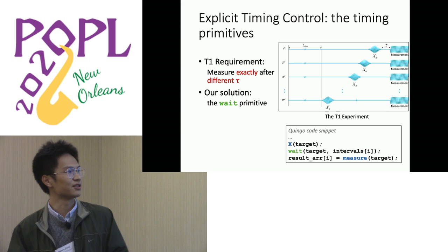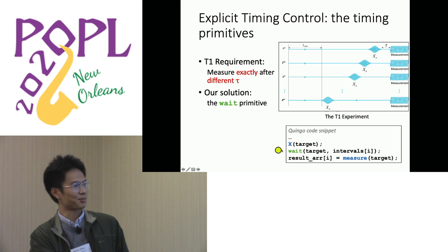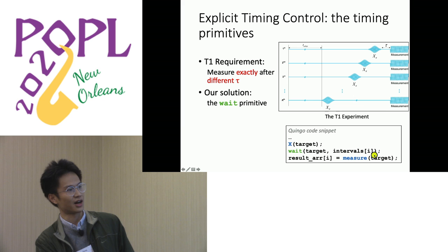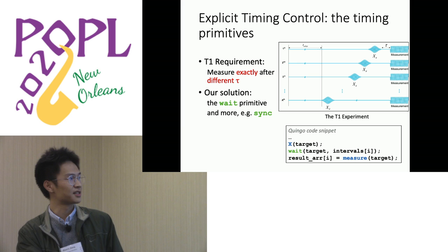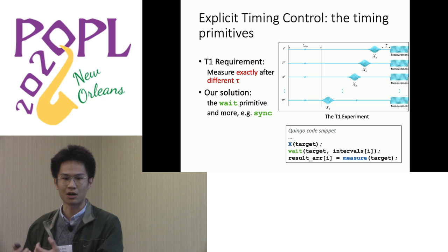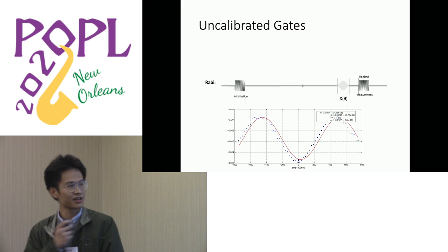Our solution is to provide a 'wait' primitive. Here is a Quingo code snippet: it first applies an X gate to the target qubit, waits for a time specified by the interval i, and then measures the target and records the result. Quingo also provides more timing primitives, such as the 'sync' primitive to support synchronizing qubits for multi-qubit operations.